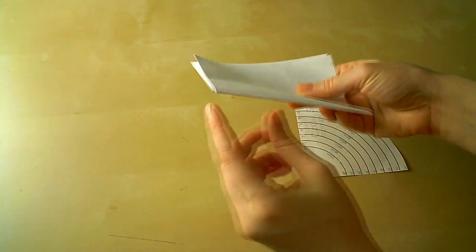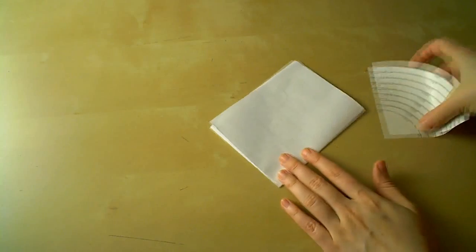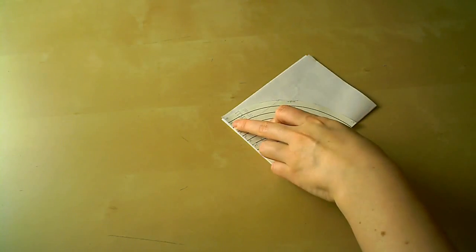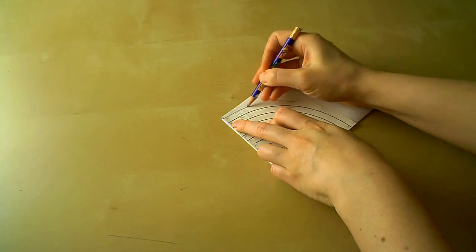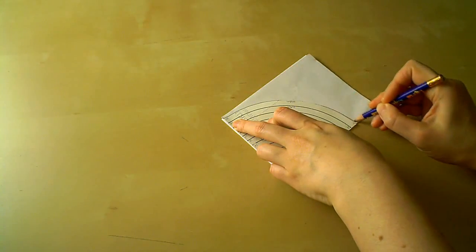Now we're going to go back to the circle skirt template and cut around the 26 inch guideline. Now we want to trace around the template on the scrap paper. And when you're lining the corners up, make sure you're lining the template up with the corner of the paper where the two folded edges meet. So line that up and then trace around it.